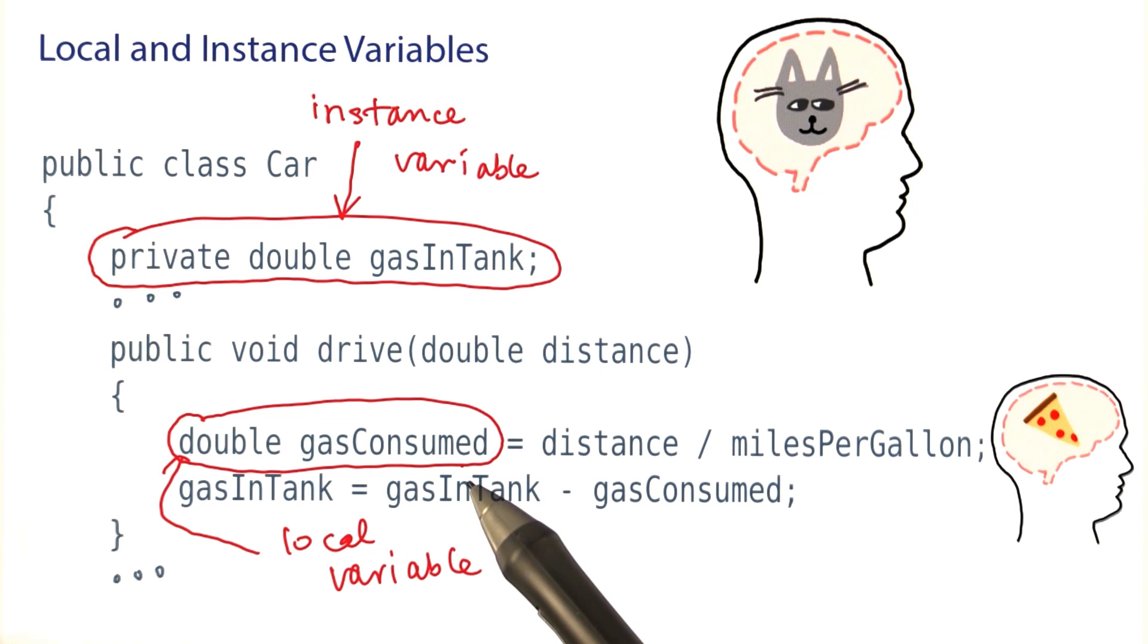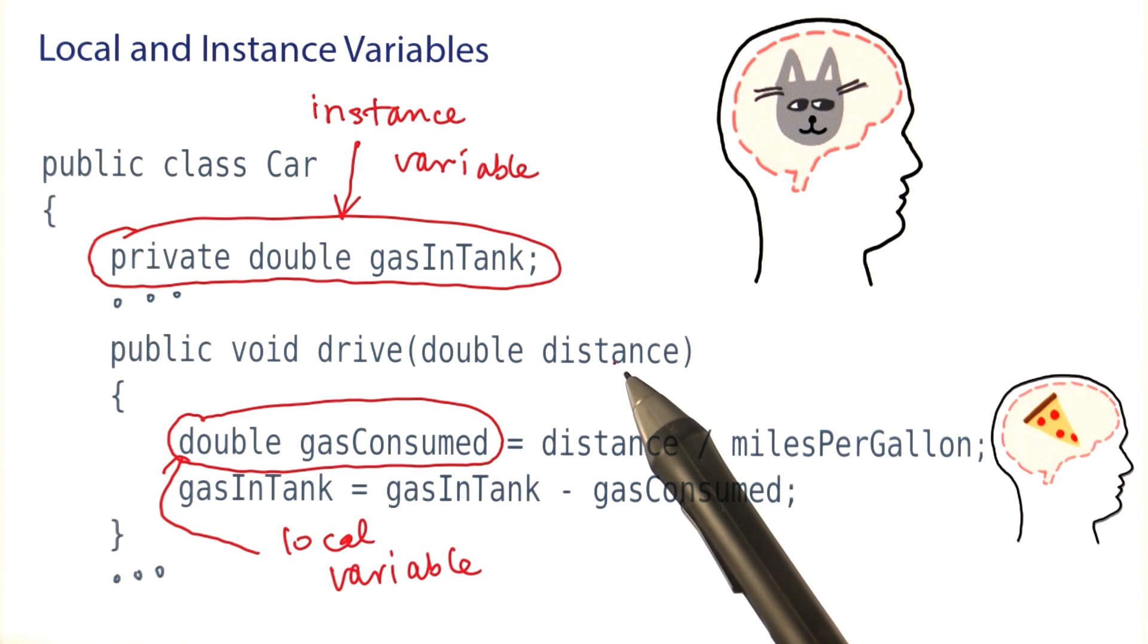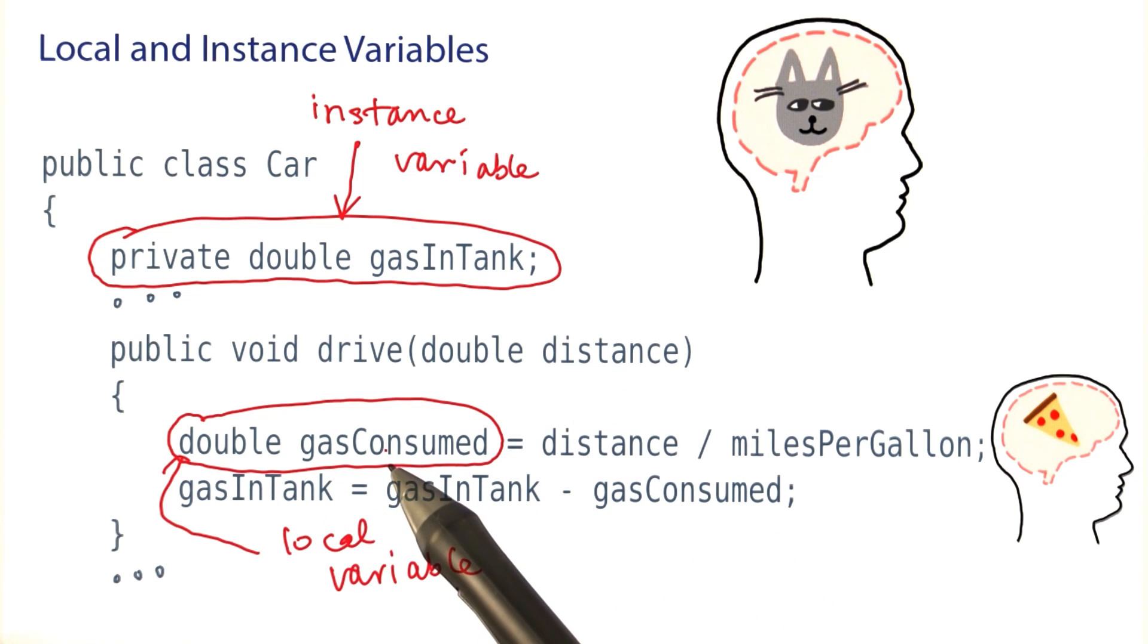In this case here, we compute the gas consumed for driving this particular distance, update the gas in tank, and then we no longer care that this was the particular amount of gas consumed. We can safely forget it when we exit the method. That's why we put this variable inside the method and made it into a local variable.